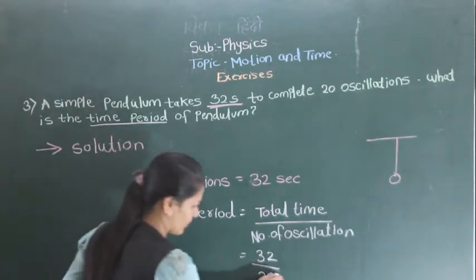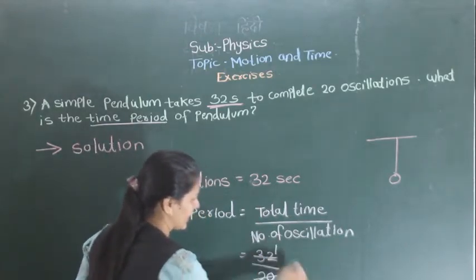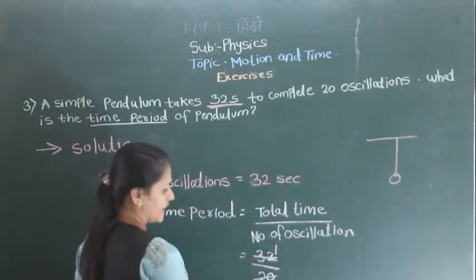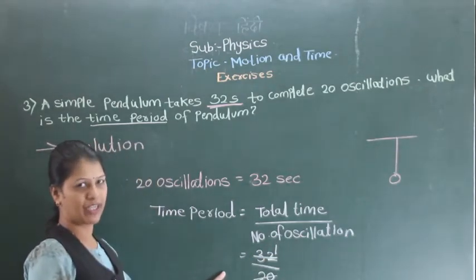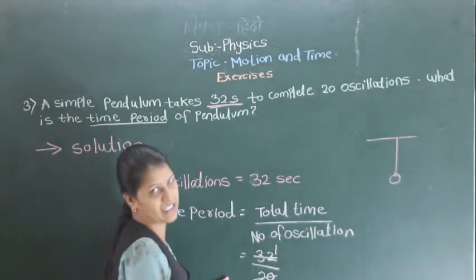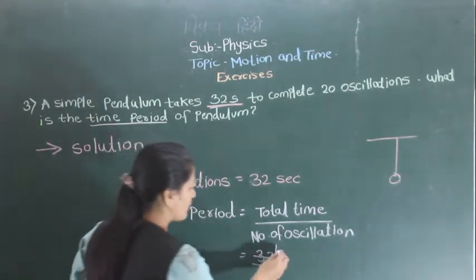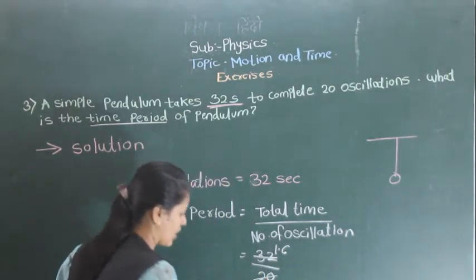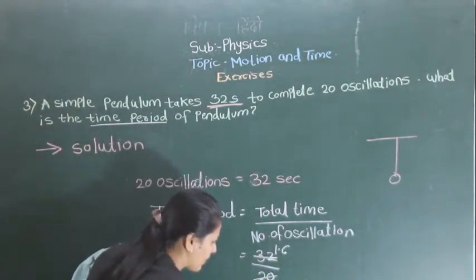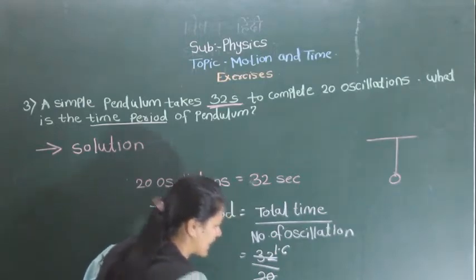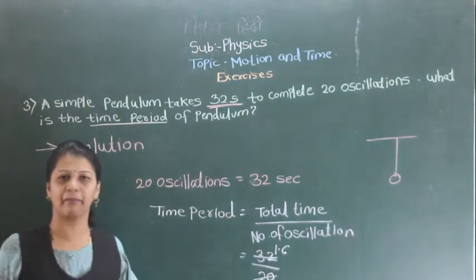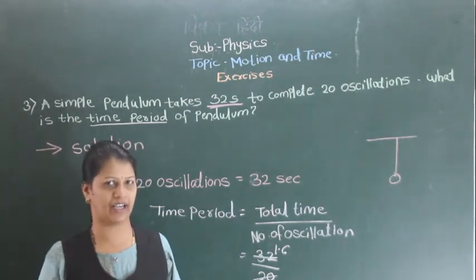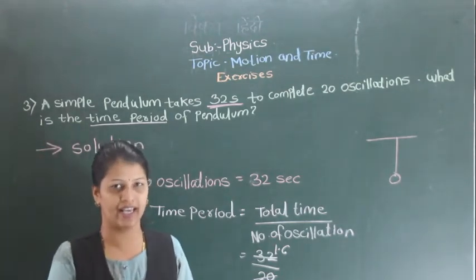When we divide this: 32 seconds divided by 20 oscillations, the answer is 1.6 seconds. So the time period is 1.6 seconds. Let me move on to other types that you will see.